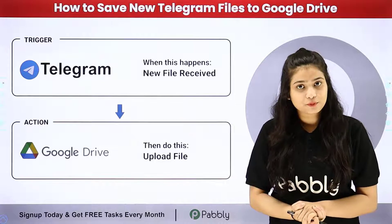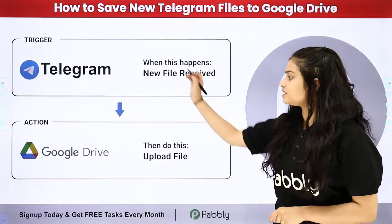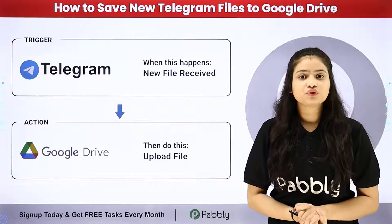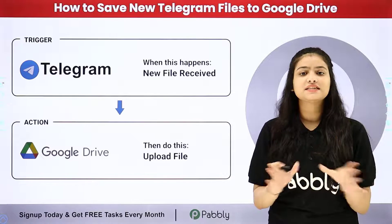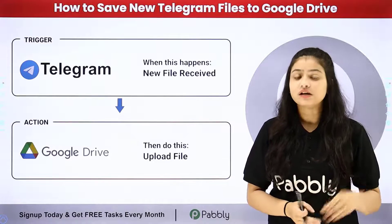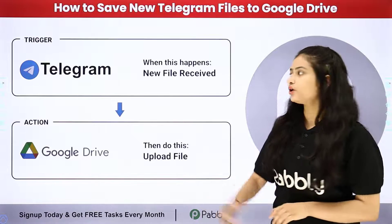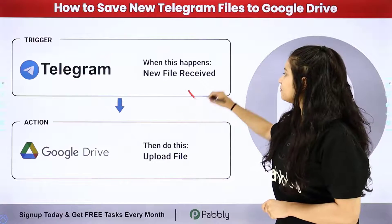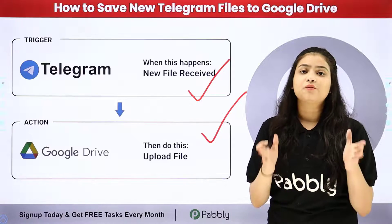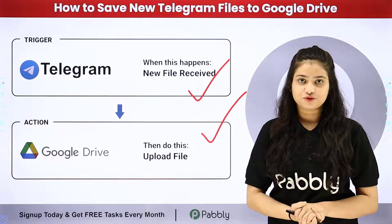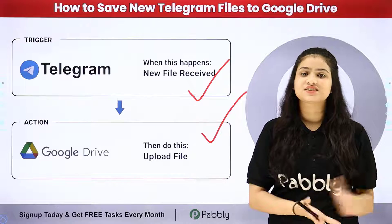So how are we going to automate this entire process? For this we will have to set up a connection between Telegram and Google Drive, and we are going to do that without any coding or programming skills with the help of Pabbly Connect, which is an amazing automation and integration software. Pabbly Connect works on two principles: trigger and action. In trigger we are going to take Telegram and in action we are going to take Google Drive. Let me take you all to my screen.